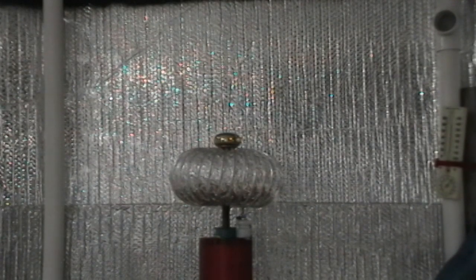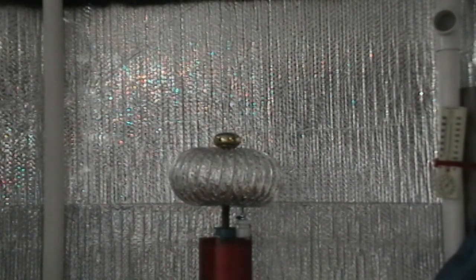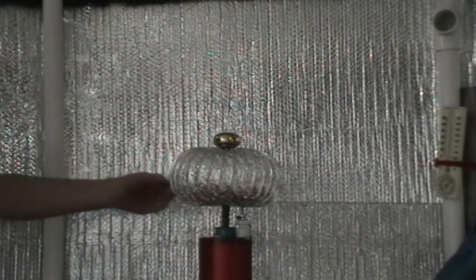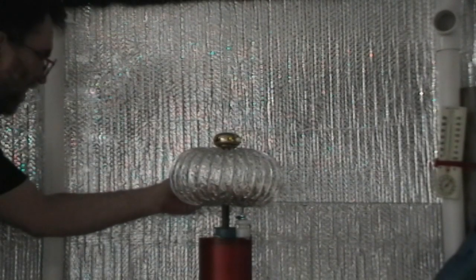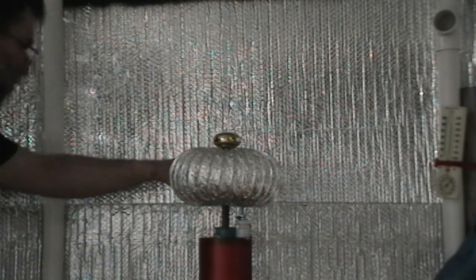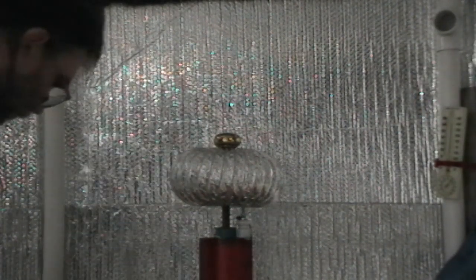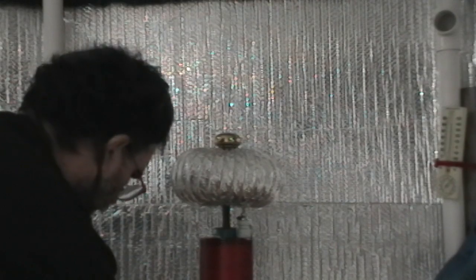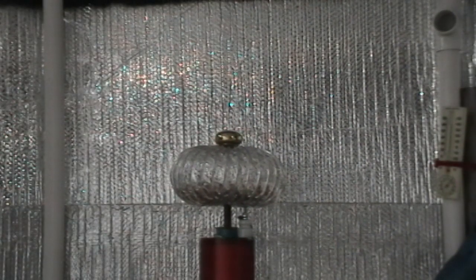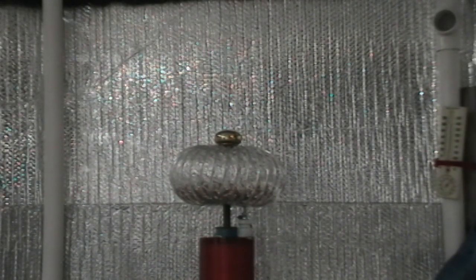It's pretty much still just grounding out to the wall over there. And that wall is 33 centimeters to the aluminized wall over there. So if you believe spark gap tables, that's one megavolt. I'm not sure if I do.